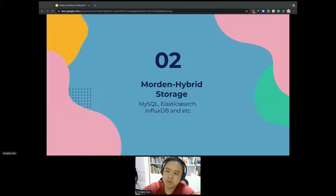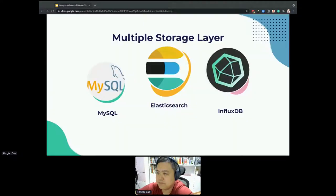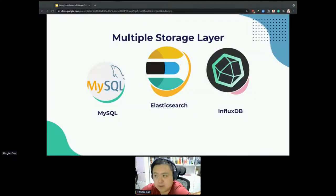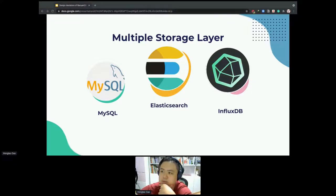Next, we will introduce the modern hybrid storage: MySQL, Elasticsearch, and InfluxDB. MySQL is a traditional relational database which can handle structured data properly. Elasticsearch is a search and analysis engine based on the Lucene search engine. InfluxDB is a time-series database which empowers developers to build IoT analysis and monitoring software.